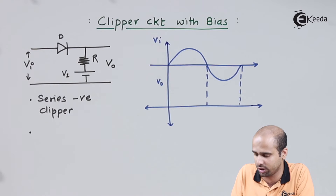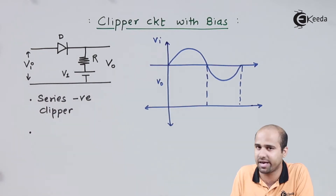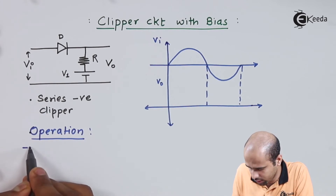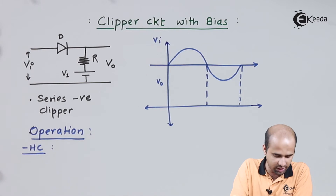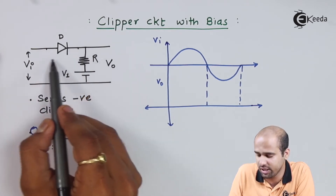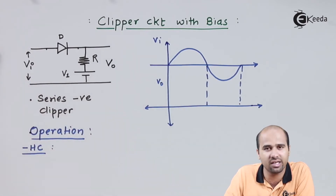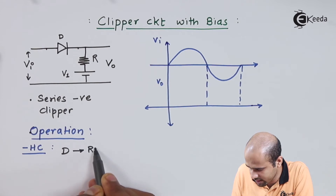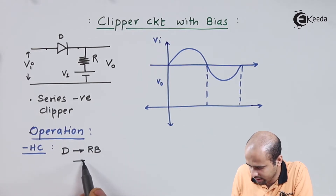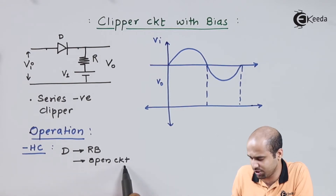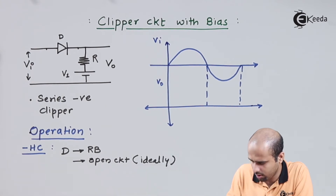Then I will give you a trick to directly plot the output waveform just by identifying the particular bias potential. To do the operation, first of all we will learn the negative half cycle. In the negative half cycle, the voltage at the anode is negative with respect to the cathode, so obviously this diode D will become reverse biased in the complete negative half cycle. As diode D becomes reverse biased, it is ideally an open circuit.